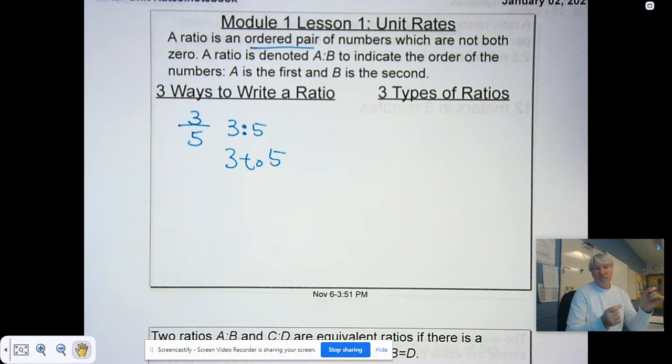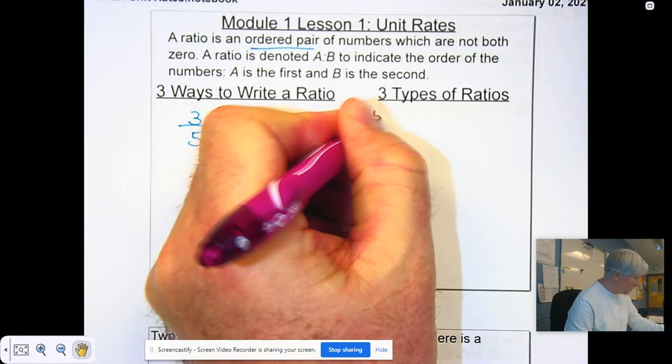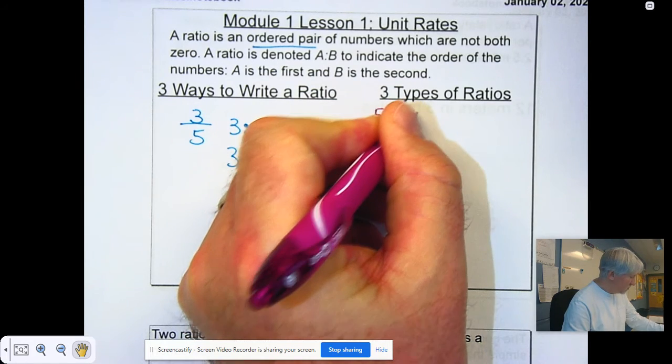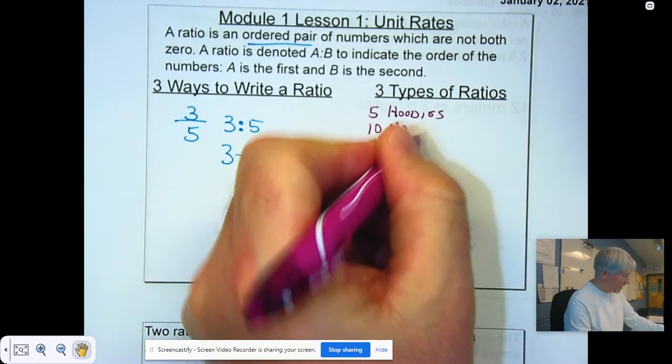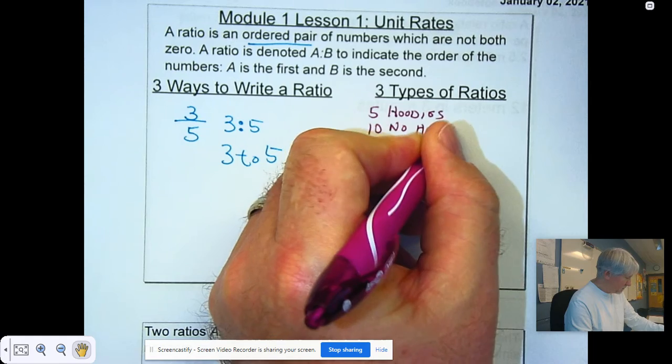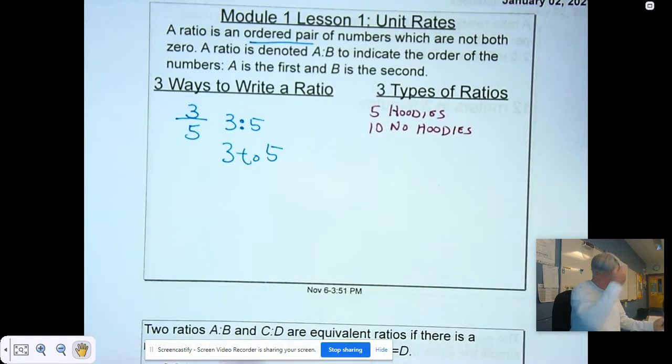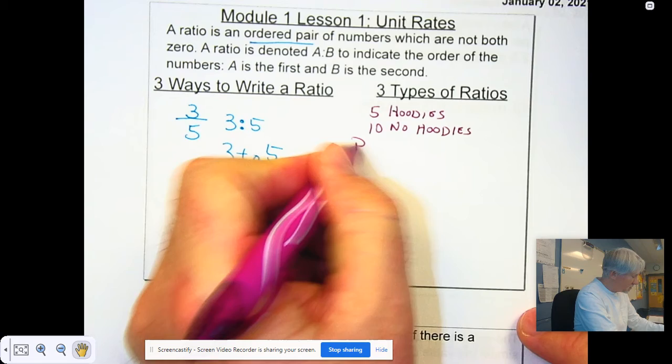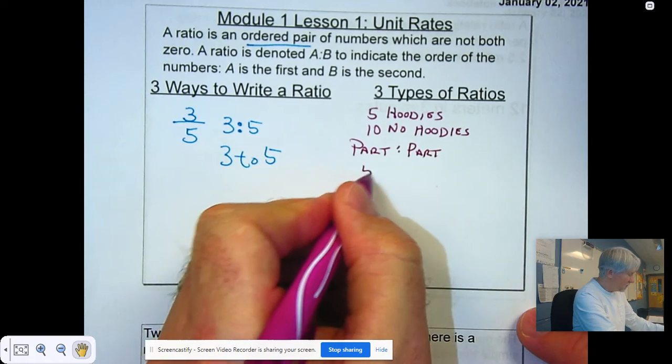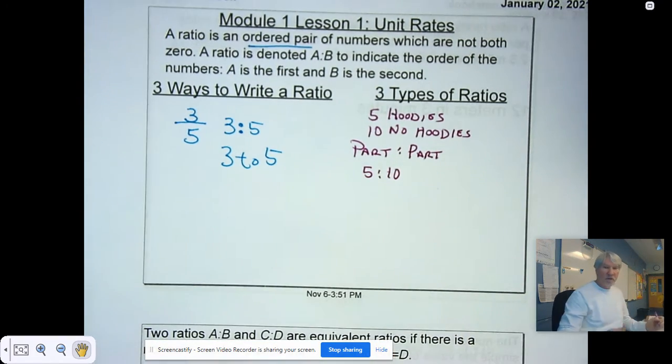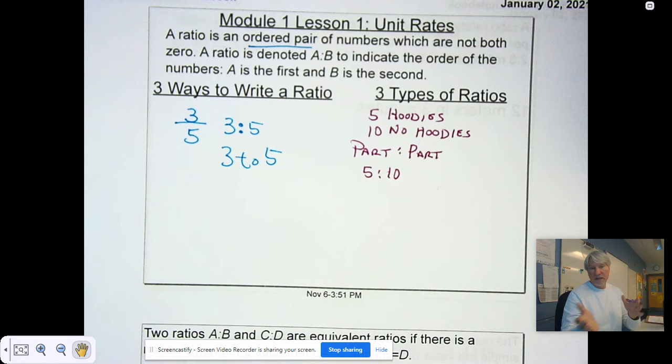Now, the types of ratios are different than the ways to write them. Say, for example, we had 5 kids in the classroom who had hoodies and then we had 10 kids that did not have a hoodie on. If we wanted to write a part to part ratio, we could go 5 hoodies to 10 no hoodies, or 10 no hoodies to 5 hoodies. Those are the parts, part to part.